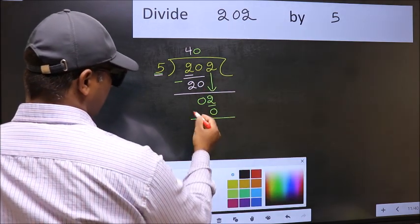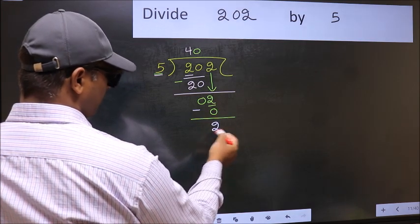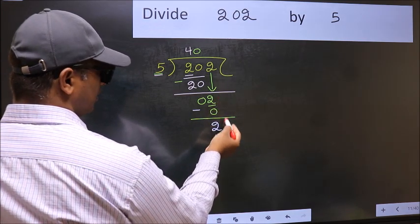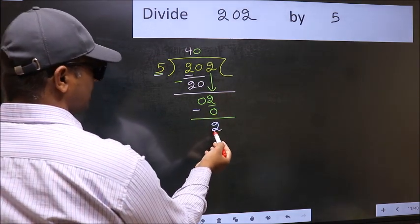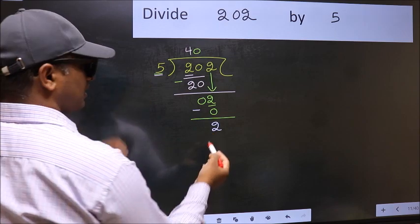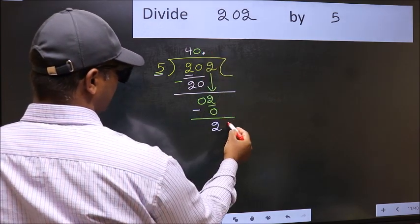Now you should subtract. 2 minus 0, 2. Over here, we did not bring any number down. And 2 is smaller than 5, so now you can put dot and take 0.